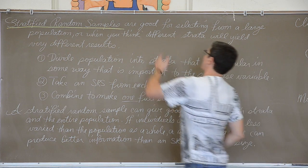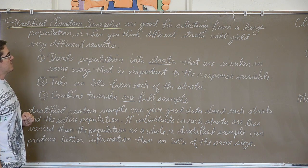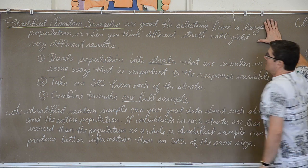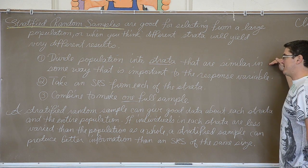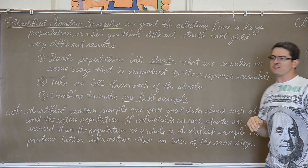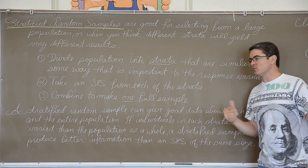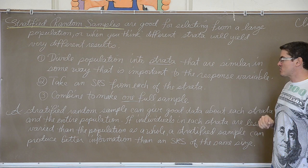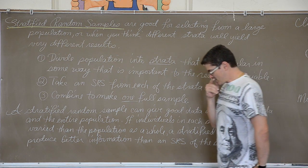Stratified random samples are good for selecting from a large population or when you think different strata will yield different results. What you do with a stratified random sample is you divide the population into strata that are similar in some way that you think is important to the response variable. That is why I am going to go back to this whole idea of an example of an education, a school setting. You take an SRS from each of the strata and you combine that to make one full sample.